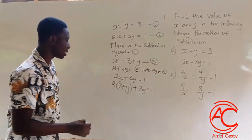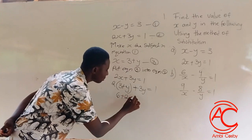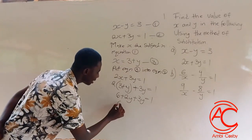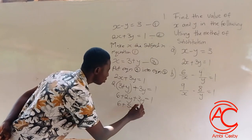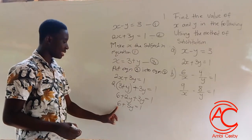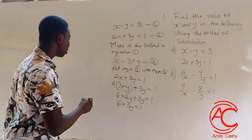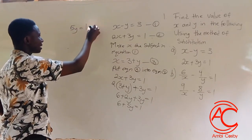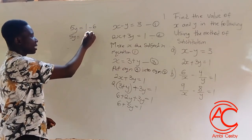Now let's expand this bracket. 2 times 3 is 6, plus 2 times y is 2y, plus 3y is equal to 1. So we have 6 plus 5y is equal to 1. We want to make y the subject, so we transpose 6 to the right-hand side. Since 6 is positive here, it becomes negative: 5y is equal to 1 minus 6.